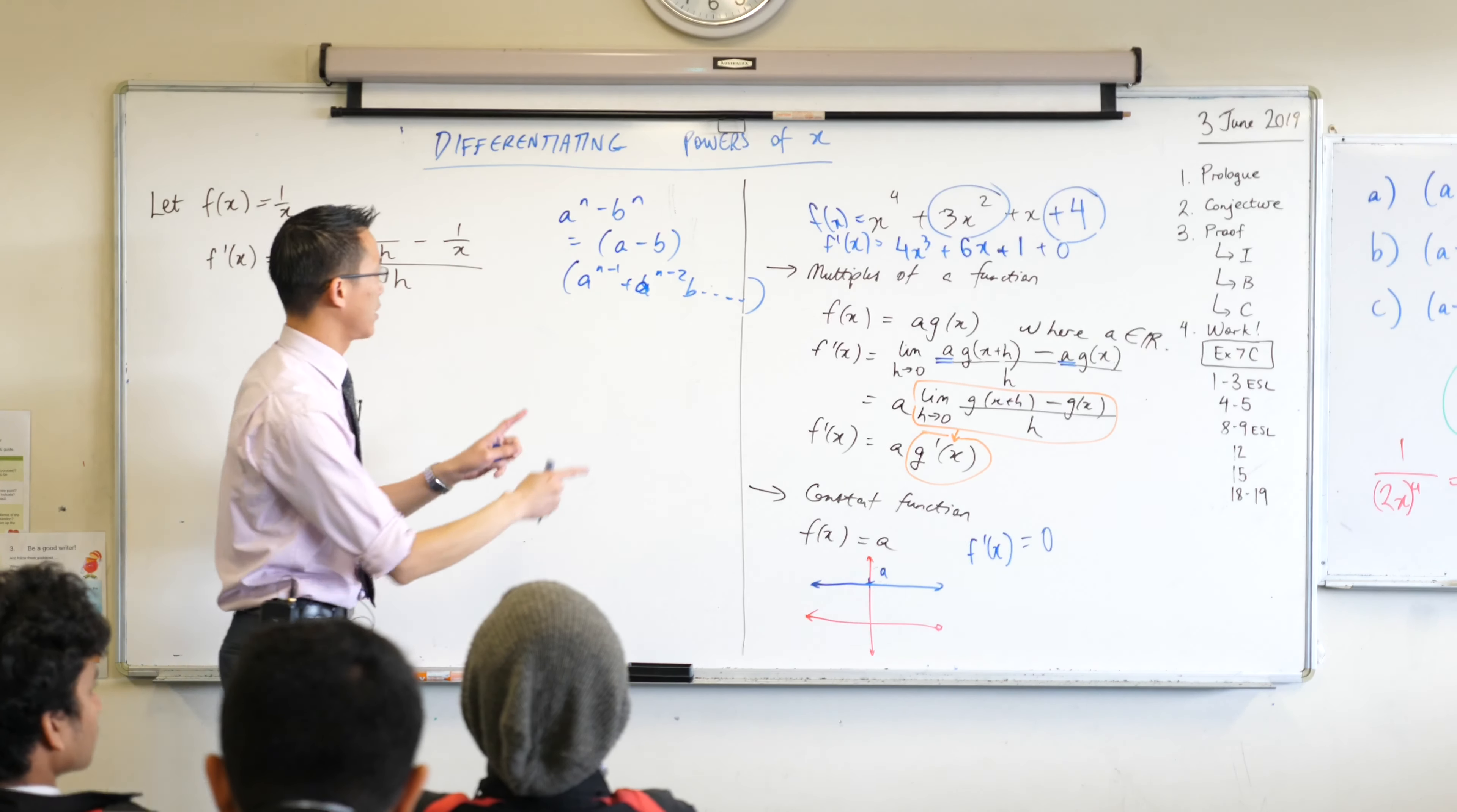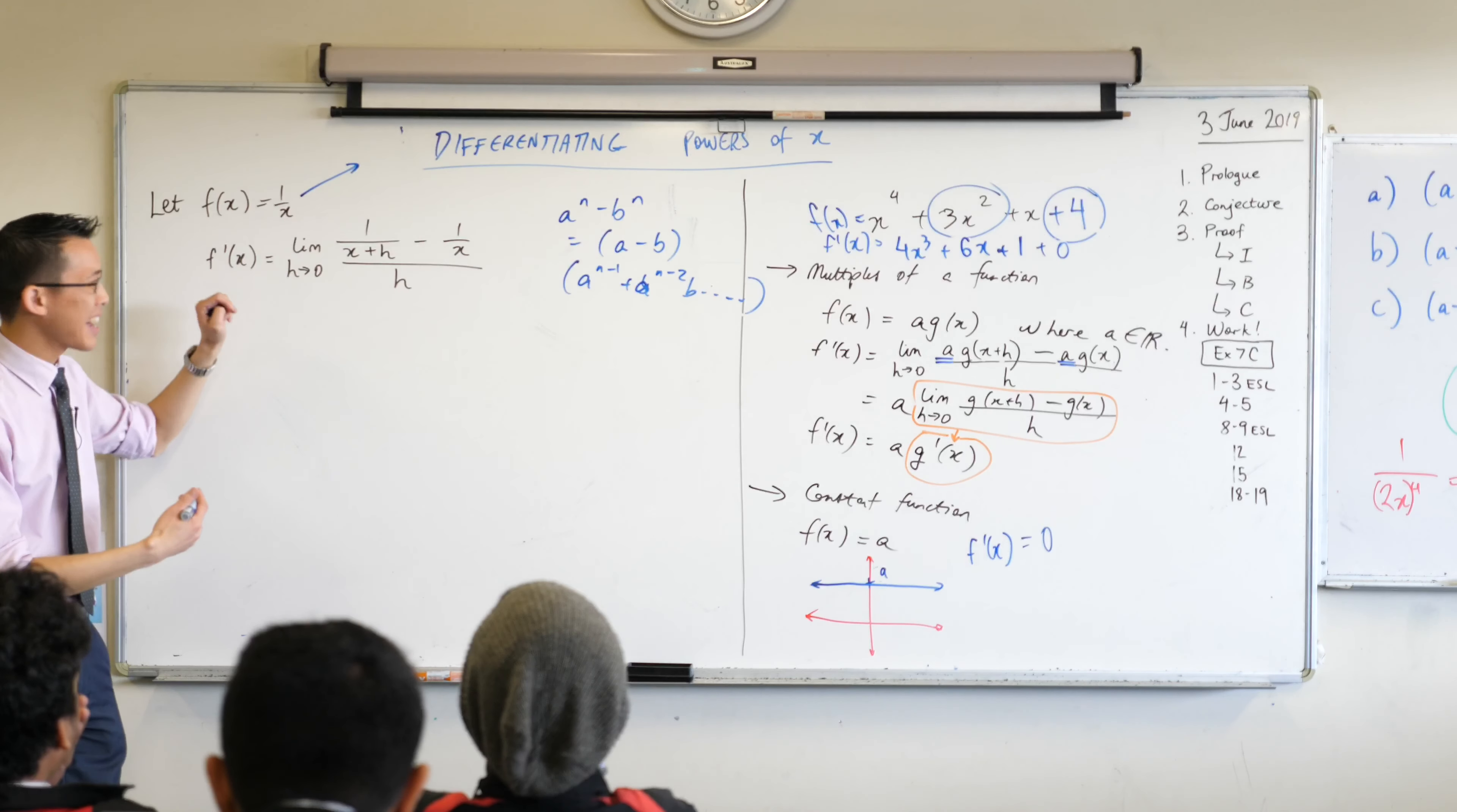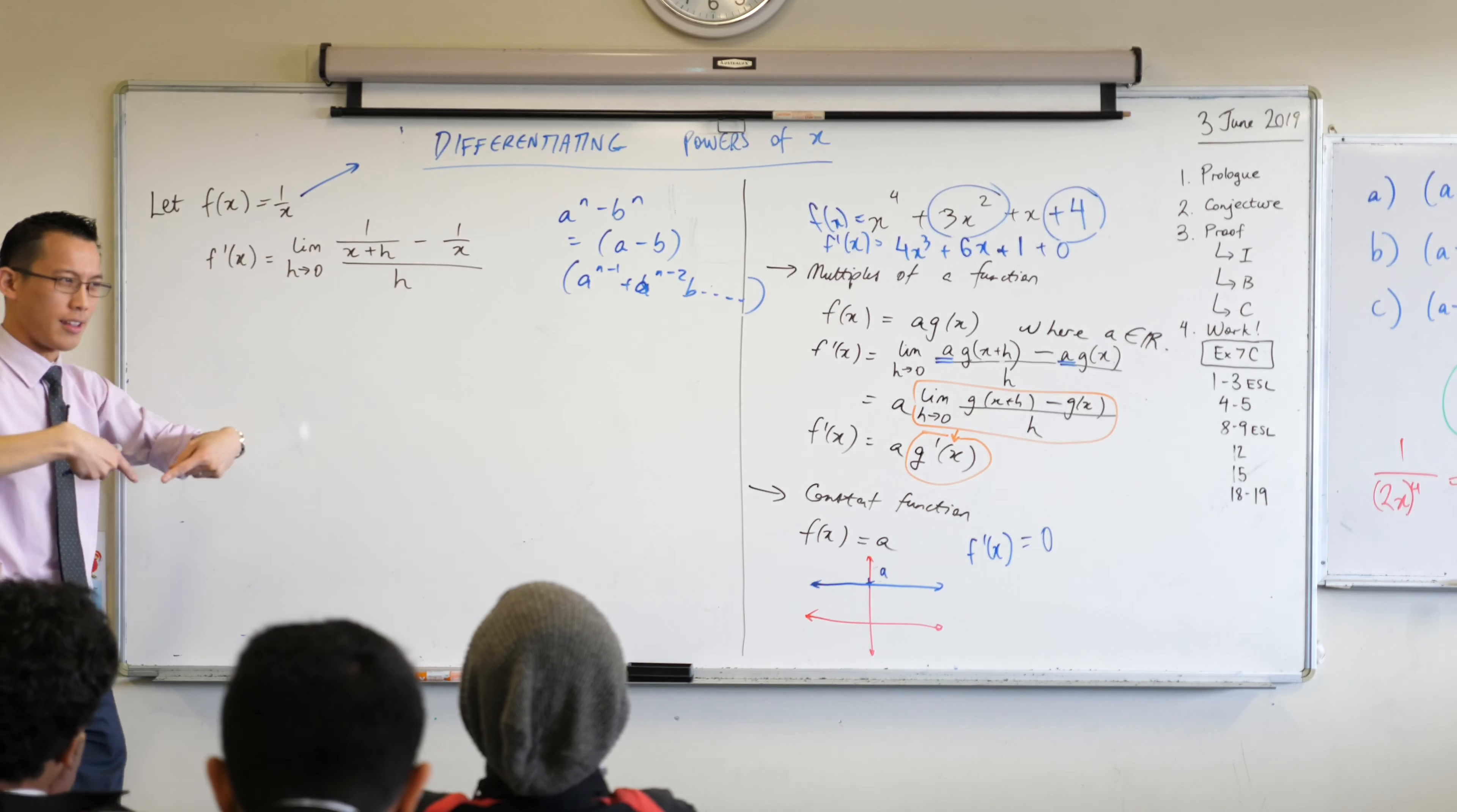Now just think about this for a second. If I think about this guy, because this I can write as an index, it would be x to what power? Now this would be a negative one, right? I used to get told like change the sign cross the line so it becomes like this is underneath so it's sort of a negative power.